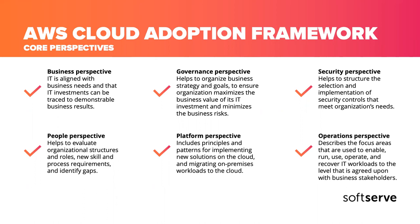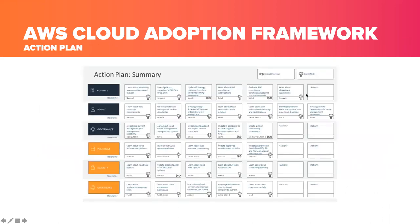The Cloud Adoption Framework describes all transformations an organization must make, across six perspectives: Business — how to align the business to the cloud; Governance — business strategy and go-to-market; Security — how to implement and maintain security in the cloud; People — roles and new skills; Platform — how to implement new solutions in the cloud; and Operations — key focus areas for IT infrastructure to achieve cloud success. Based on this evaluation, a Cloud Adoption Framework action plan is created, like a Jira board for the organization across different perspectives.